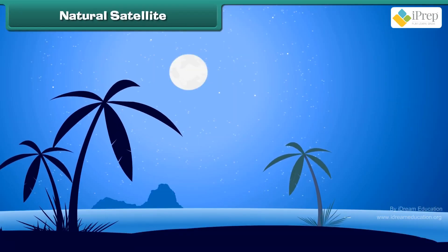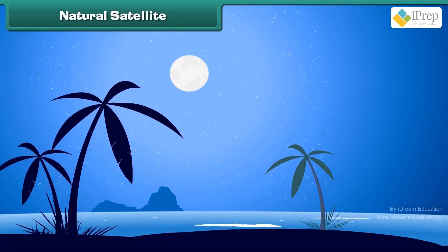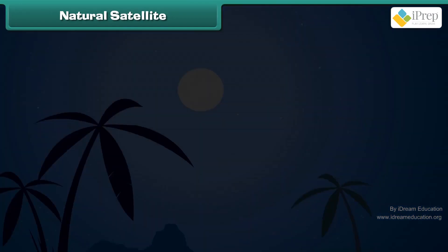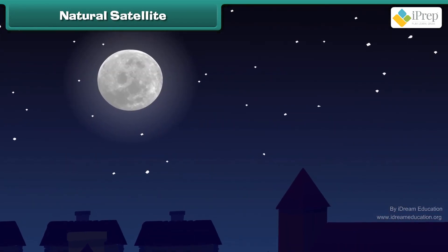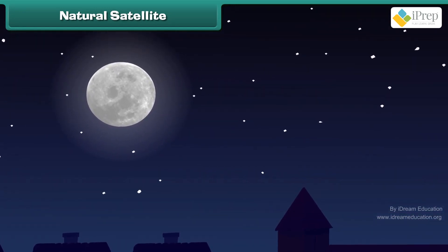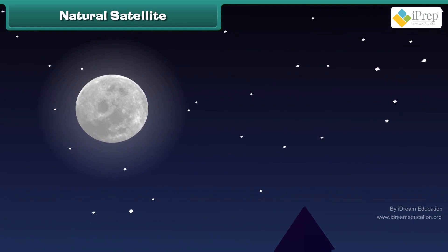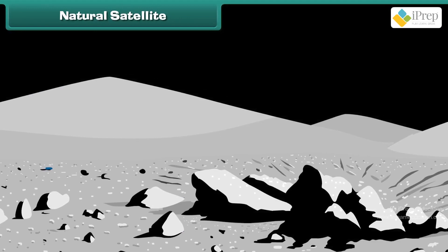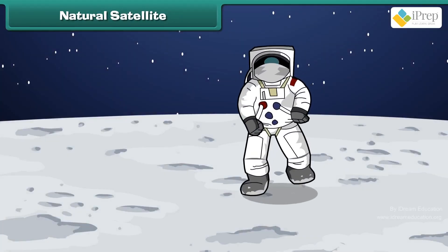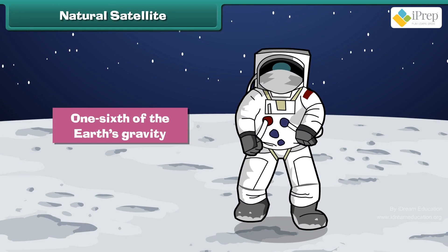The Earth has only one natural satellite, the Moon. It appears big because the distance of the Moon from the Earth is less than the distance between the Earth and the Sun. The Moon appears as the brightest object in the sky after the Sun, but it does not have its own light — it reflects the light of the Sun. There is no life on the Moon. Its gravity is almost one-sixth of the Earth's gravity, and objects feel lighter on the Moon's surface due to less gravity.